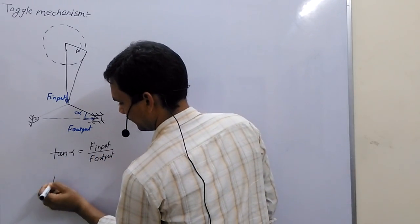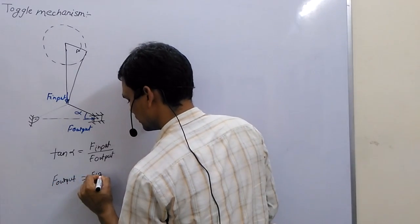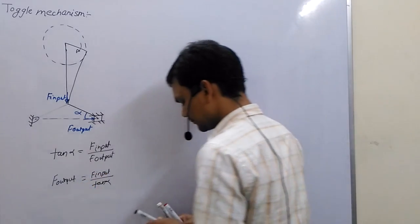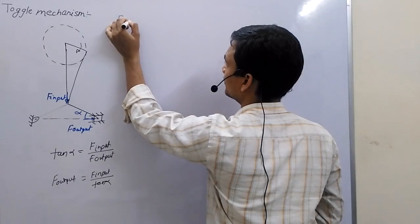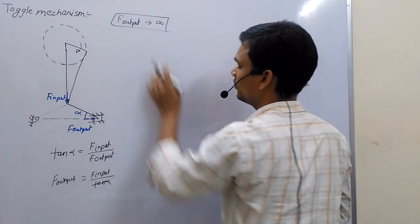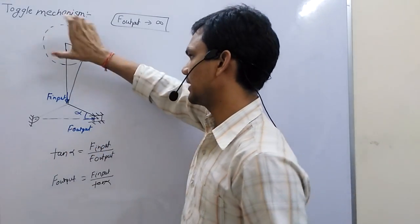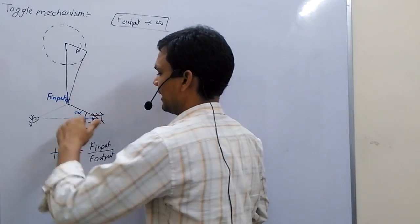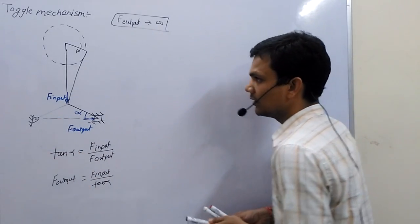If I rewrite this formula, then if the value of alpha is 0, then F output tends to infinity. From here, you can understand: when angle alpha approaches zero — as this crank will rotate — this point will come near the action line of the piston.